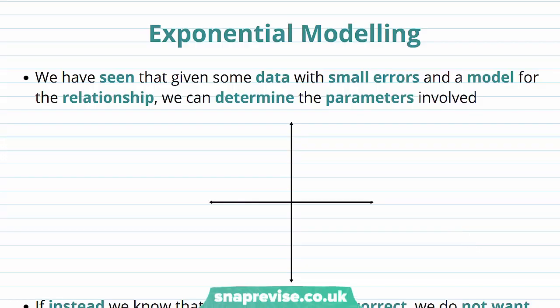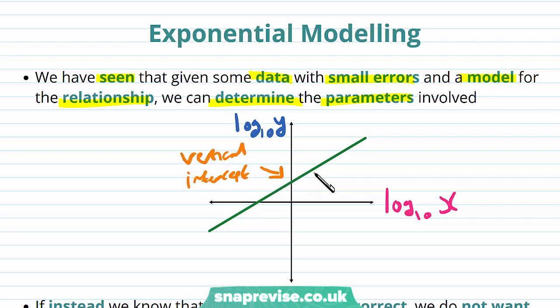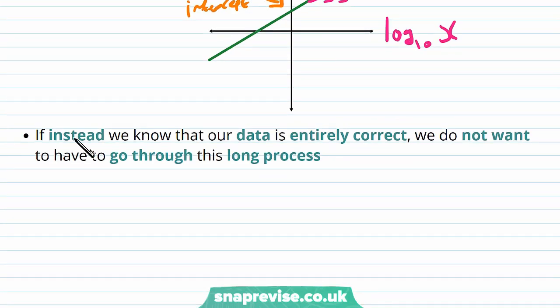So how can we do exponential modelling? We've seen that given some data with small errors and a model for the relationship, we can determine the parameters involved. Let's say we have a particular relationship and we reduce it to a straight line in the log base 10 of x against log base 10 of y axes, where two parameters are involved. If instead we know that our data is entirely correct, we do not want to have to go through this long process.